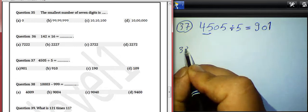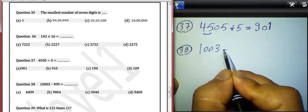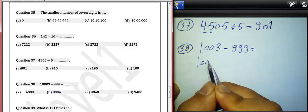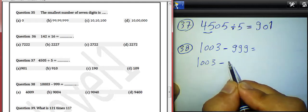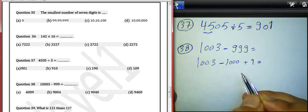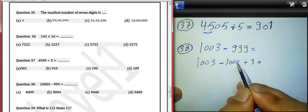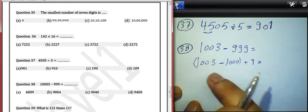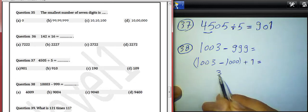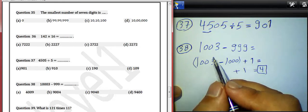Question 38: 1,003 subtract 999 equals what? We can use a method here. Write 1,003 subtract, and we will add 1. It becomes negative 1,000 plus 1 equals negative 999. So we can find the result about 1,000, and with 1,003 the result will be 3. Then 3 plus 1 equals 4.